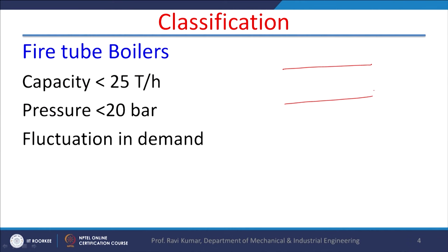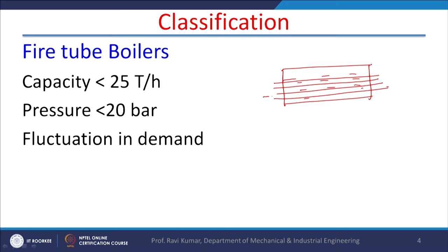Regarding the classification of boilers, broadly they are classified into fire tube boilers and water tube boilers. In a fire tube boiler, there is a shell filled with water. Through this shell there are one or more tubes, and in these tubes the flue gases are flowing. Flue gases are gases generated after burning the fuel and are at a very high temperature. When these flue gases pass through the shell, heat exchange takes place between the gases and the water, and steam is generated. These are known as fire tube boilers because there is fire inside the tube.